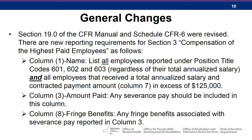Section 19 of the CFR Manual and Schedule CFR 6 were revised. There were new reporting requirements for Section 3, Compensation of the Highest Paid Employees. Column 1, Name: list all employees reported under Position Title Code 601, 602 and 603, regardless of their total annualized salary, and all employees that received a total annualized salary and contracted payment amount in excess of $125,000. Column 3, Amount Paid: any severance pay should be included in this column. Column 8, Fringe Benefits: any fringe benefits associated with severance pay reported in Column 3.